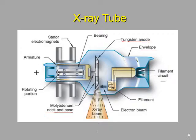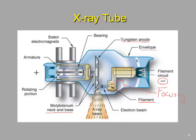Here we've indicated the filament circuit — the negatively charged portion of the tube, feeding into our filament. Around the filament, not indicated on this drawing, is a focusing cup. This is also negatively charged, and so it forces the electrons back towards the filament. As thermionic emission is occurring and electrons are being boiled off, this focusing cup pushes them back towards the filament so they're not straying out into the vacuum.